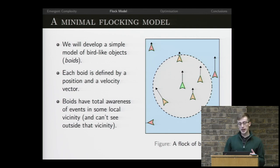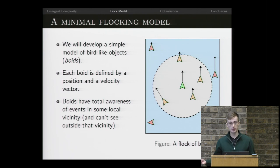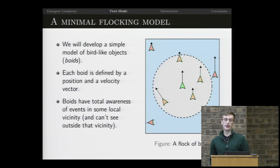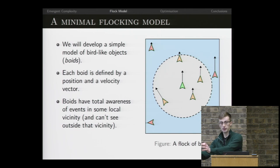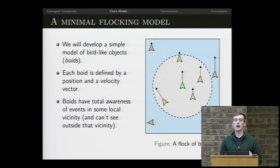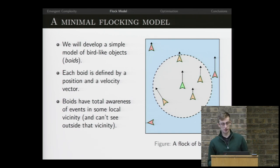Each bird changes its velocity according to behaviors we define. We want the birds to behave in certain ways, and the total change in velocity will be the sum of each of these influences. We'll reason about how we want our system to behave and then derive some behaviors.